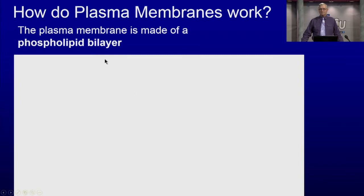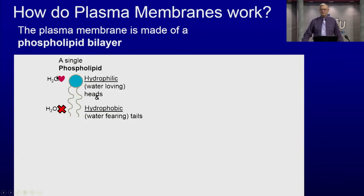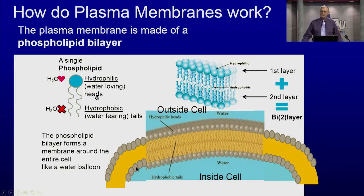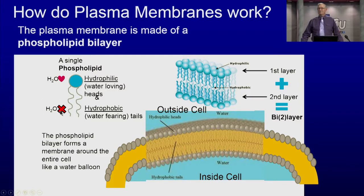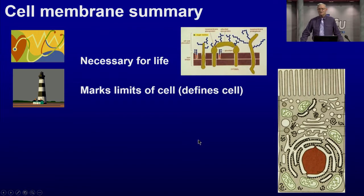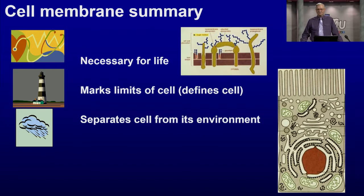The cell membrane, or plasma membrane, is a lipid bilayer. The phospholipid part that loves water faces the outside, and the part that hates water forms the hydrophobic center. Outside the cell there's water, inside the cell there's water, but in the center you have a hydrophobic area. The tails line up so they are not touching water. In summary: the cell membrane is necessary for life — without it you're not a cell. It marks the limit, defines the cell, and separates the cell from its environment. Your organelles are inside the cell membrane.